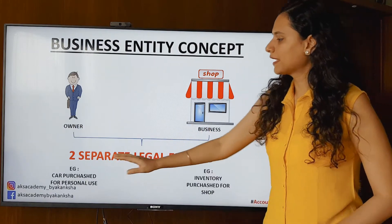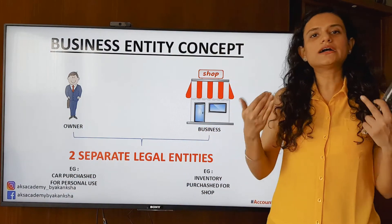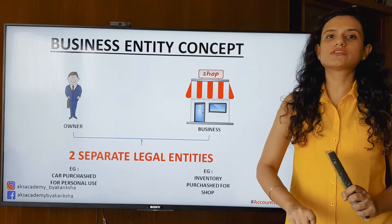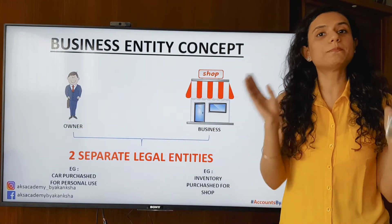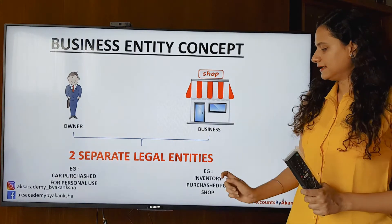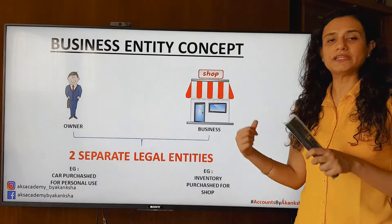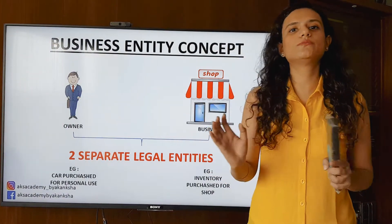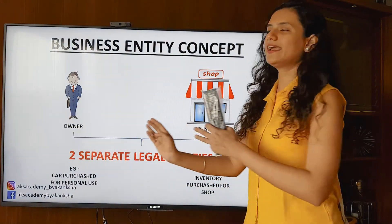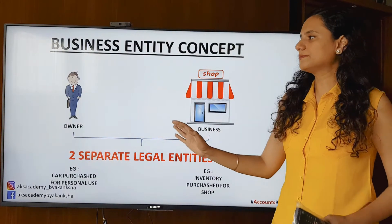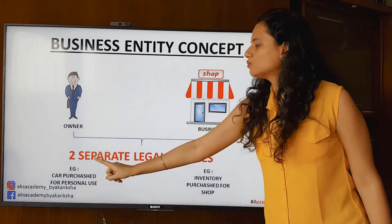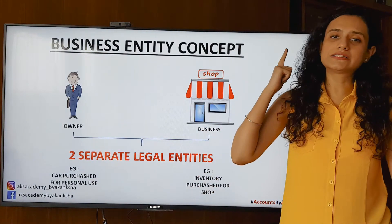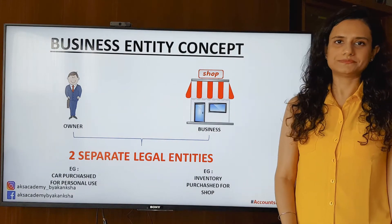Let's look at some examples. If the owner buys a car for personal use — for their family — then we will record it only in the owner's personal books of accounts. But if they're purchasing inventory for their shop, then it will go into the shop's business books of accounts and not in their personal books of accounts. So we have created a separation, a division between the two — so that we understand that the owner and the business are two separate legal entities. When this is asked in your answer, use these words — they are extremely important.